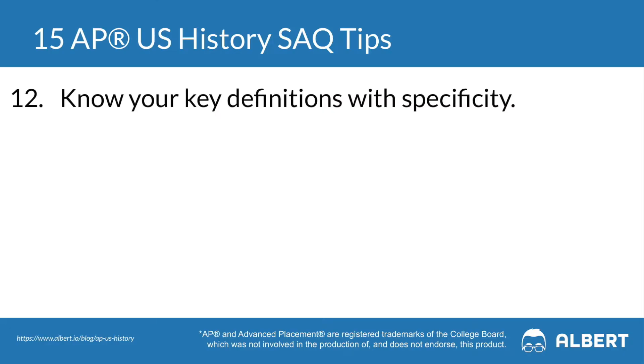Tip twelve is to know your key definitions with specificity. For example, it is not enough to simply state that the New Deal and the Great Society programs helped the economy. To earn points for understanding these two concepts, you would have had to share how the New Deal focused on the American economy after the Great Depression to combat unemployment, while the Great Society focused on setting up social support such as Medicare and Medicaid to support Americans.